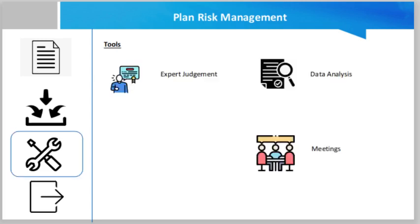The tools for this process: the first tool is expert judgment. Expert familiarity with the organization's approach to managing risk includes enterprise risk management, tailoring risk management to the specific needs of a project, and the type of risks likely to be encountered. Data analysis is another tool — data analysis techniques include stakeholder analysis to determine the risk appetite of project stakeholders.